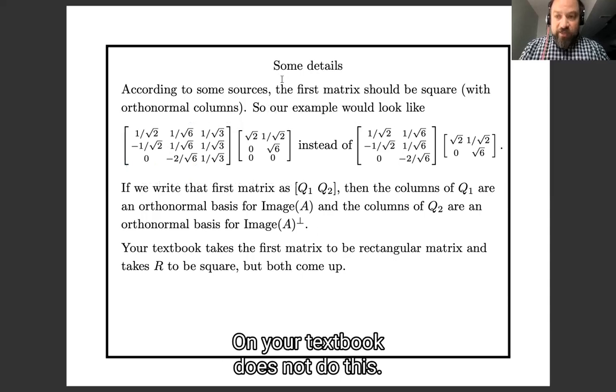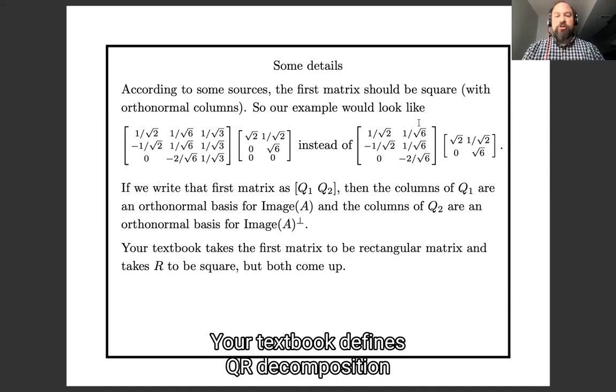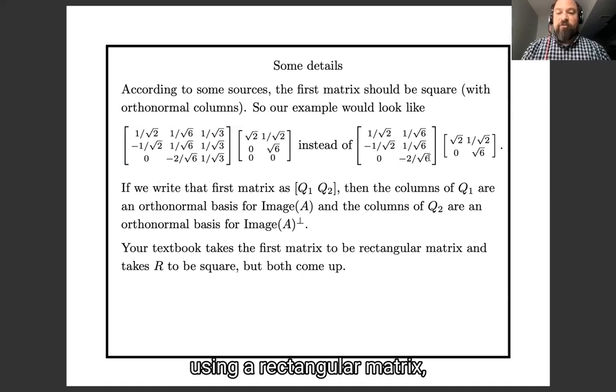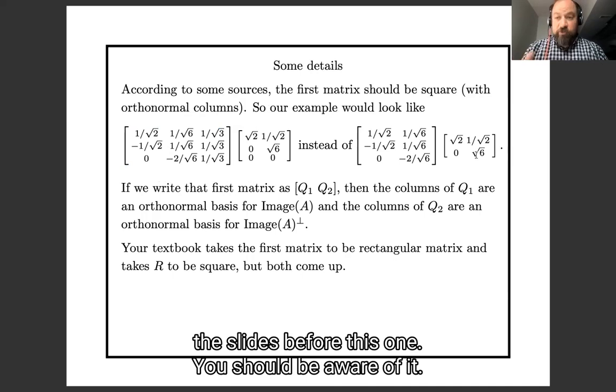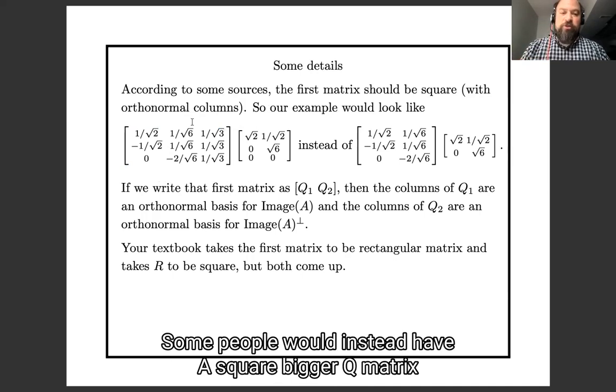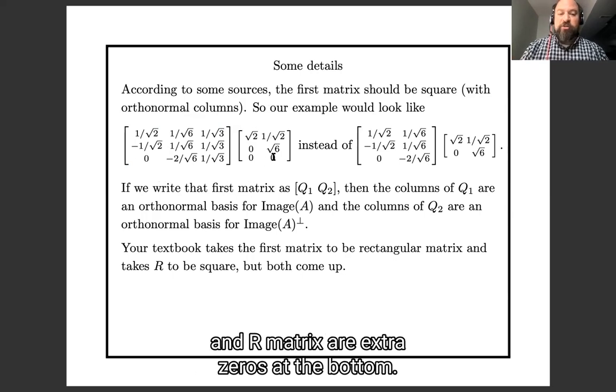Your textbook does not do this. Your textbook defines QR decomposition using a rectangular matrix and a square matrix, the way I've done it on the slides before this one. But you should be aware that some people would instead have a square, bigger Q matrix and an R matrix with extra zeros at the bottom.